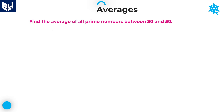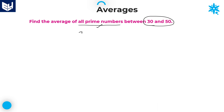Let's move on to the next question. Find the average of all prime numbers between 30 and 50. We need to find the average of all prime numbers between 30 and 50. First, write down all those prime numbers. After 30, the first prime number is 31, then 37, then 41, 43, and 47. These are the 5 prime numbers between 30 and 50.